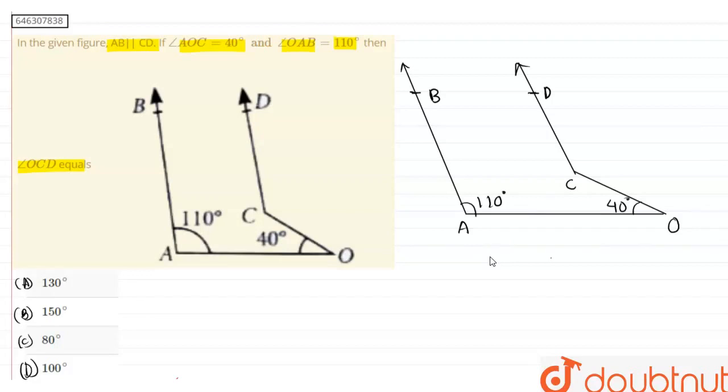Now what we are going to do to find this angle OCD, we are going to draw or construct a line CX parallel to AO. We are going to do this. So let us do this.